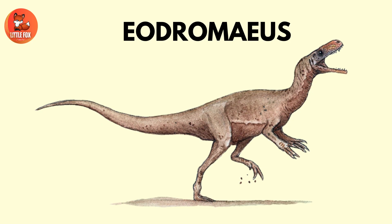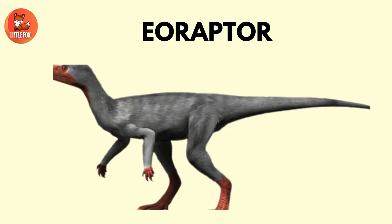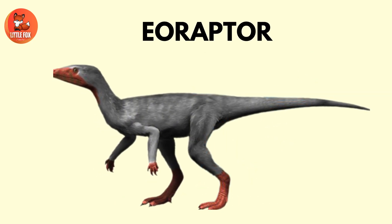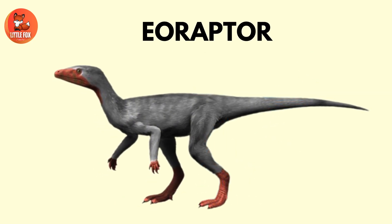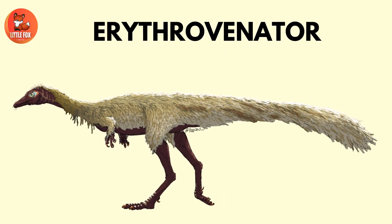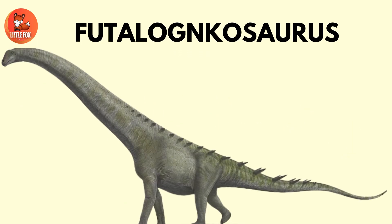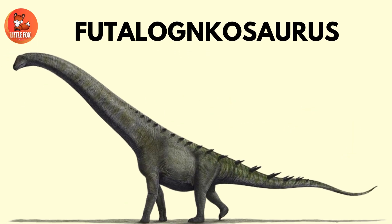Number 47: Eoraptor. Number 48: Erythrovenator. Number 49: Feudaloconosaurus.